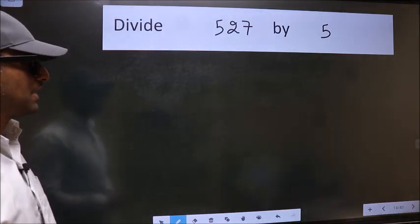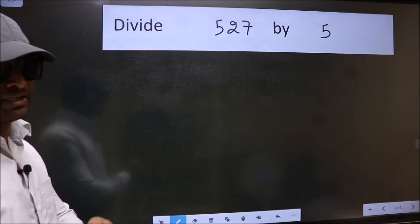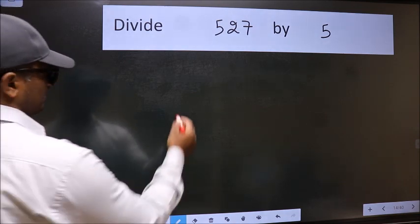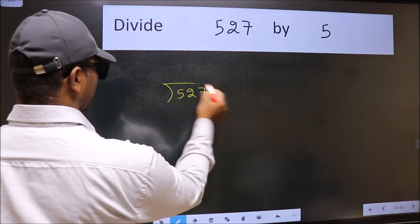Divide 527 by 5. To do this division, we should frame it in this way: 527 here and 5 here.